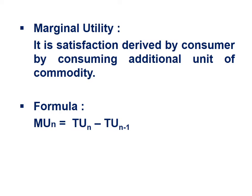The formula of marginal utility is: MUn = TUn − TU(n−1). For example, if I want to know the marginal utility of the 4th unit: MU4 = TU4 − TU3.